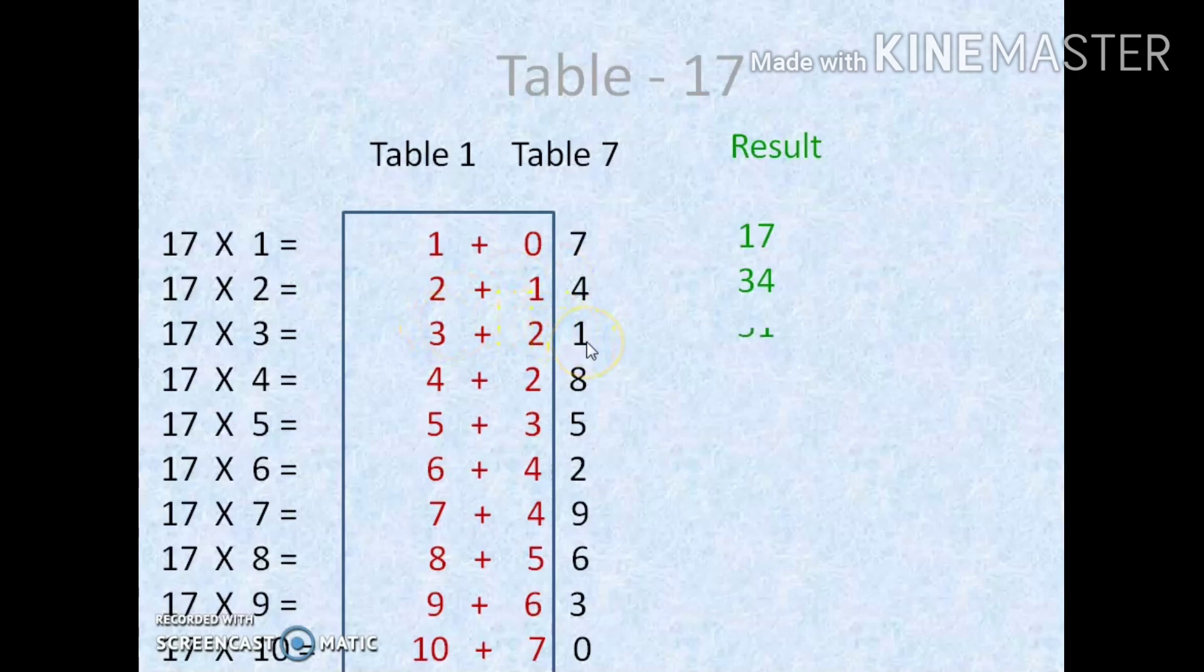4 plus 2 is 6, so 68. 5 plus 3 is 8, so 85. 6 plus 4 is 10, we have to write 10 as it is. Then we have to attach 2 at the end, so 102. 7 plus 4 is 11, so 119. Just like that we are going to write up to 17 10s are 170. Now we get the multiplication table for 17.